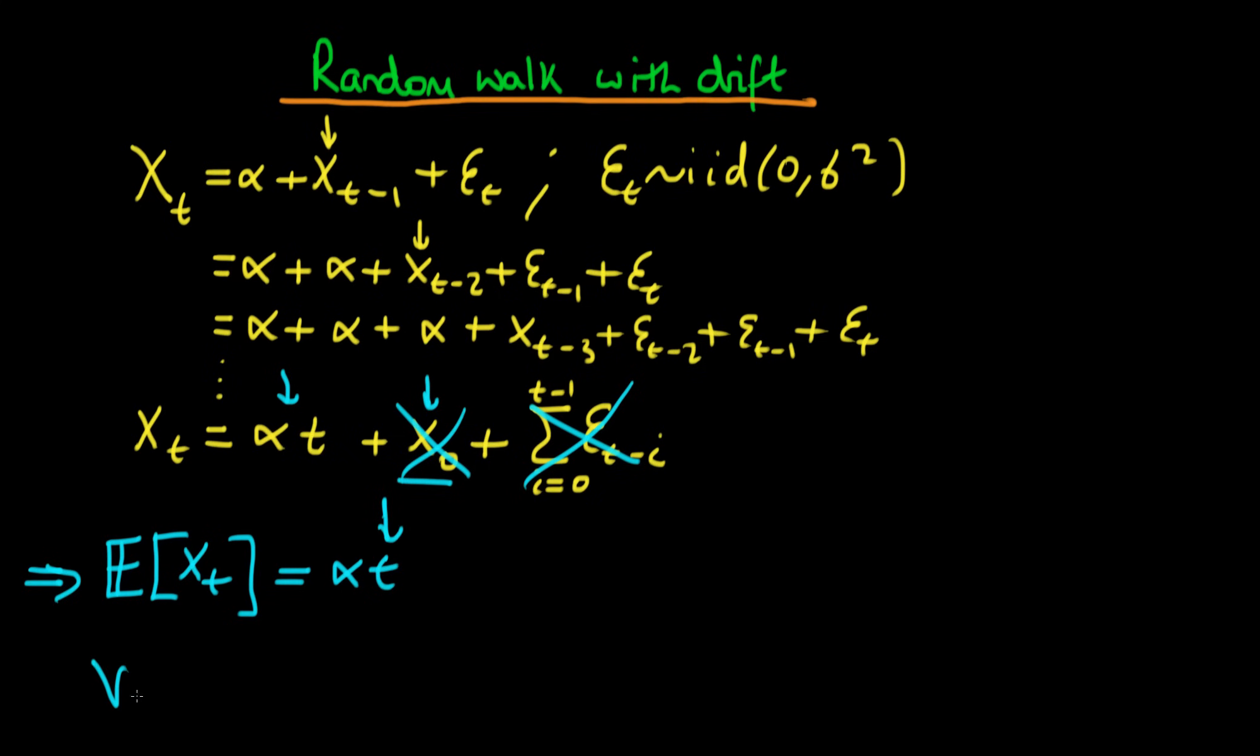What about the variance of our process xt? Well the way to work out the variance is to realize that this first term doesn't vary because it's just deterministic second term similarly doesn't vary because we're just fixing it